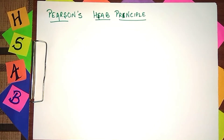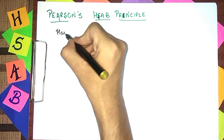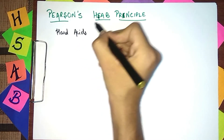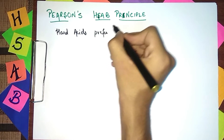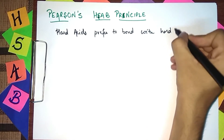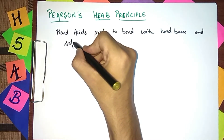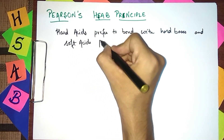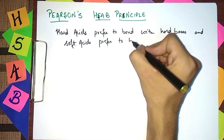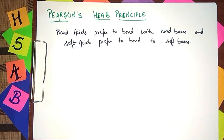In this principle, Pearson said that hard acids prefer to bond with hard bases, and soft acids prefer to bond with soft bases. This is a very easy concept — just remember that hard acid combines with hard base, and soft acid combines with soft base.